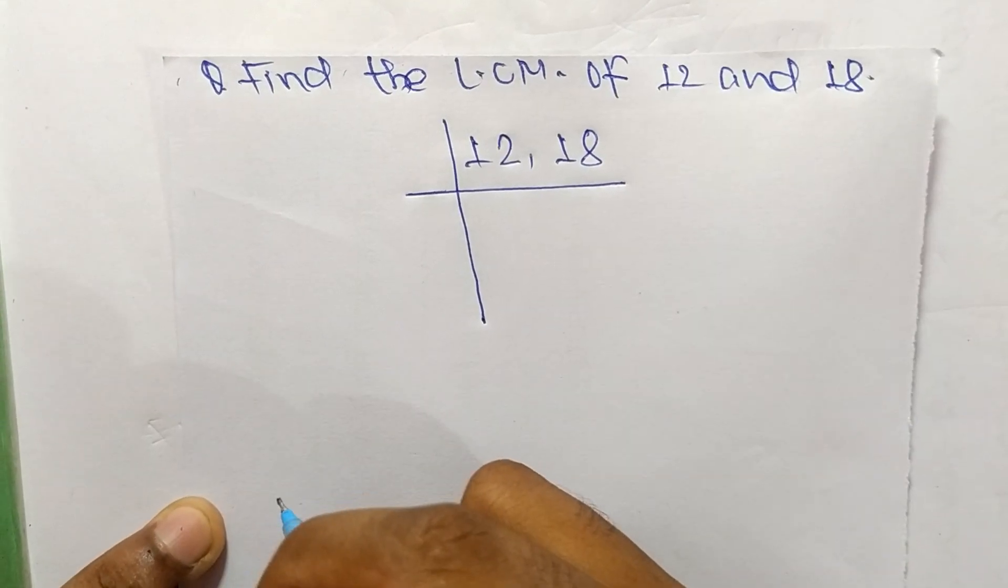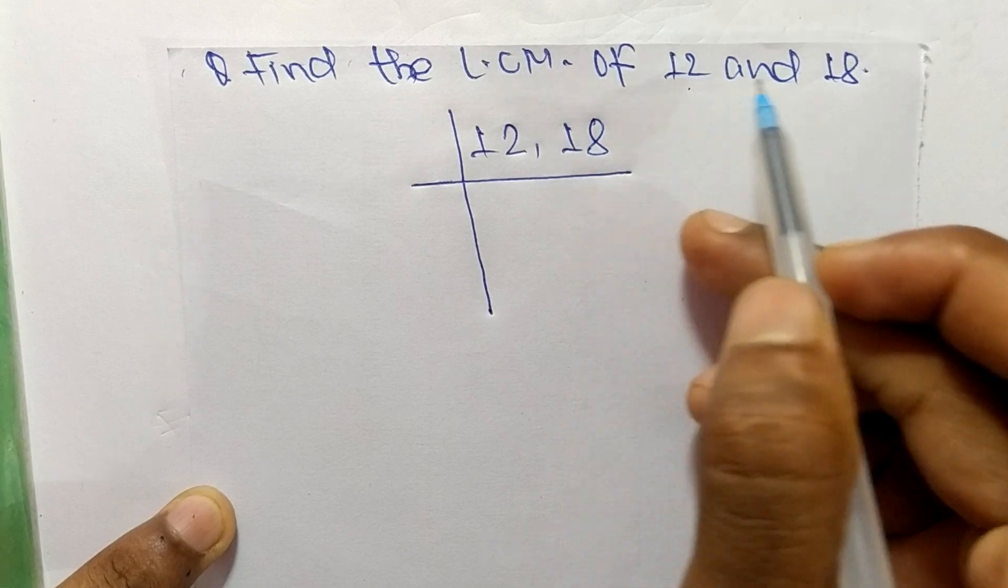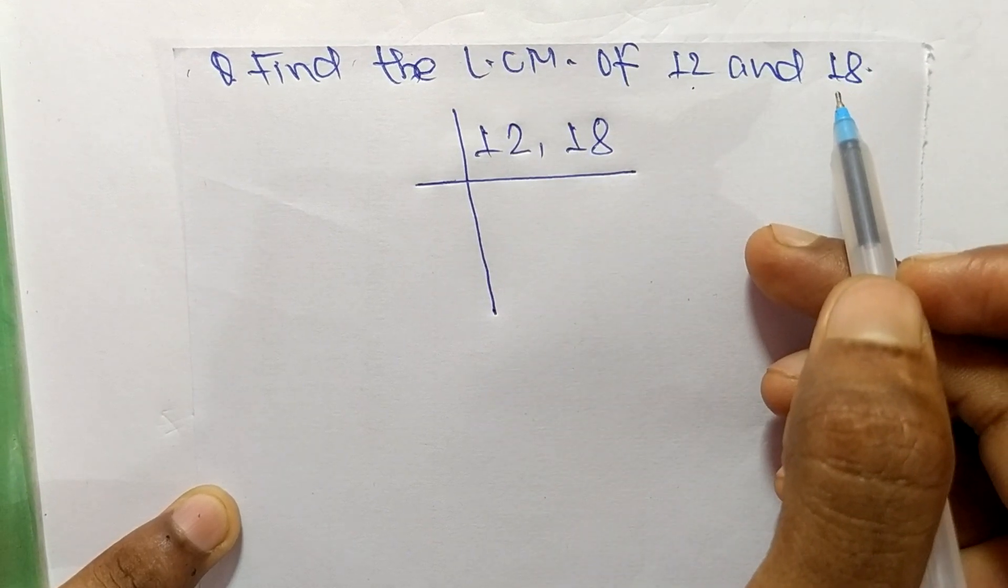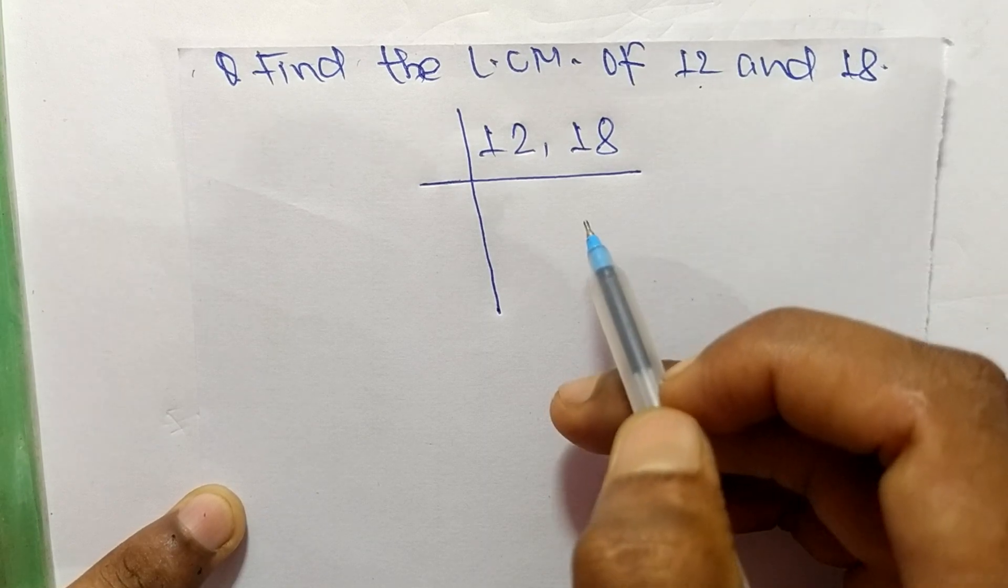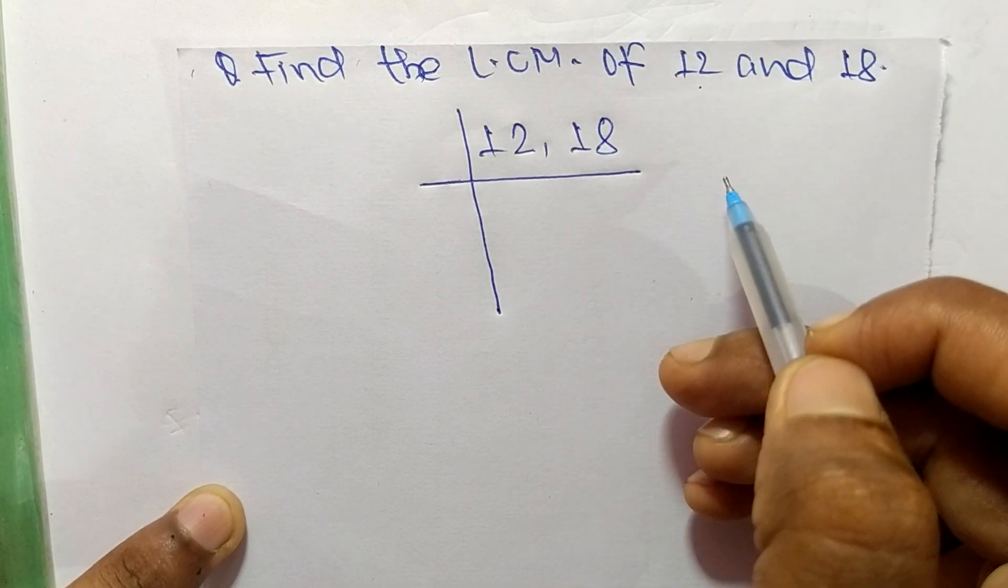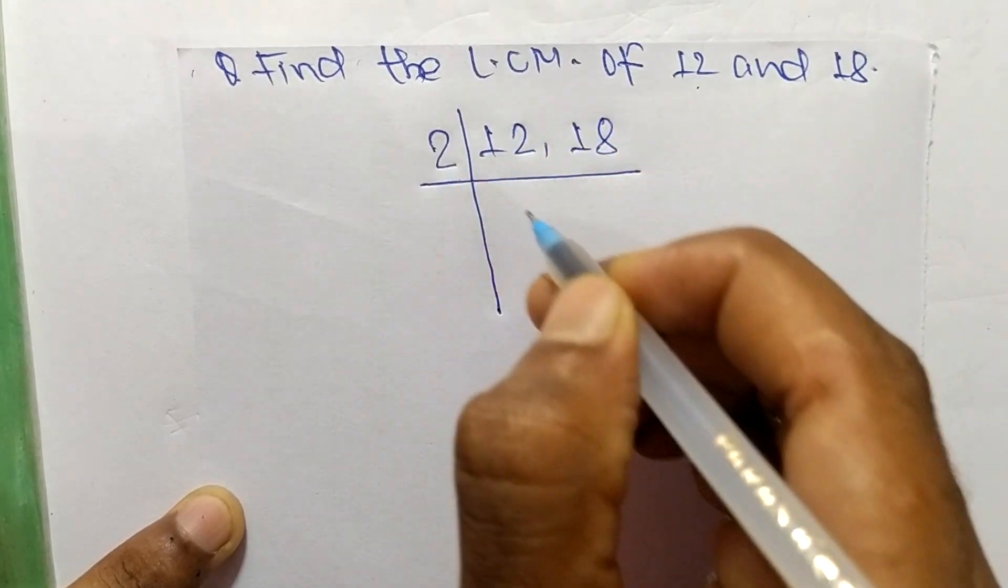So today in this video we shall learn to find the LCM of 12 and 18. To find LCM, first we have to choose the lowest number which can exactly divide 12 and 18. So the number is 2.